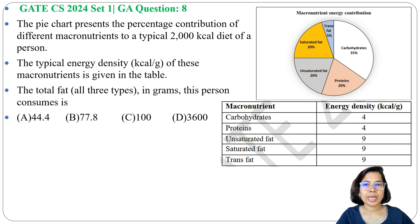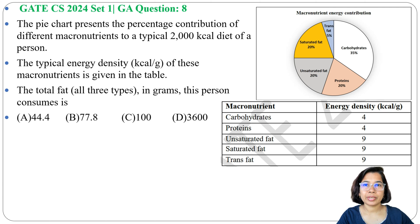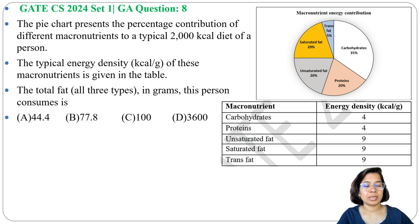There are two types of nutrients: one is macronutrient and another is micronutrient. Fat, carbohydrate, and protein are macronutrients, whereas Vitamin C, Vitamin D, Vitamin E, and B12 are all micronutrients. So this question is asking about macronutrients — meaning protein, carbohydrate, and fat.